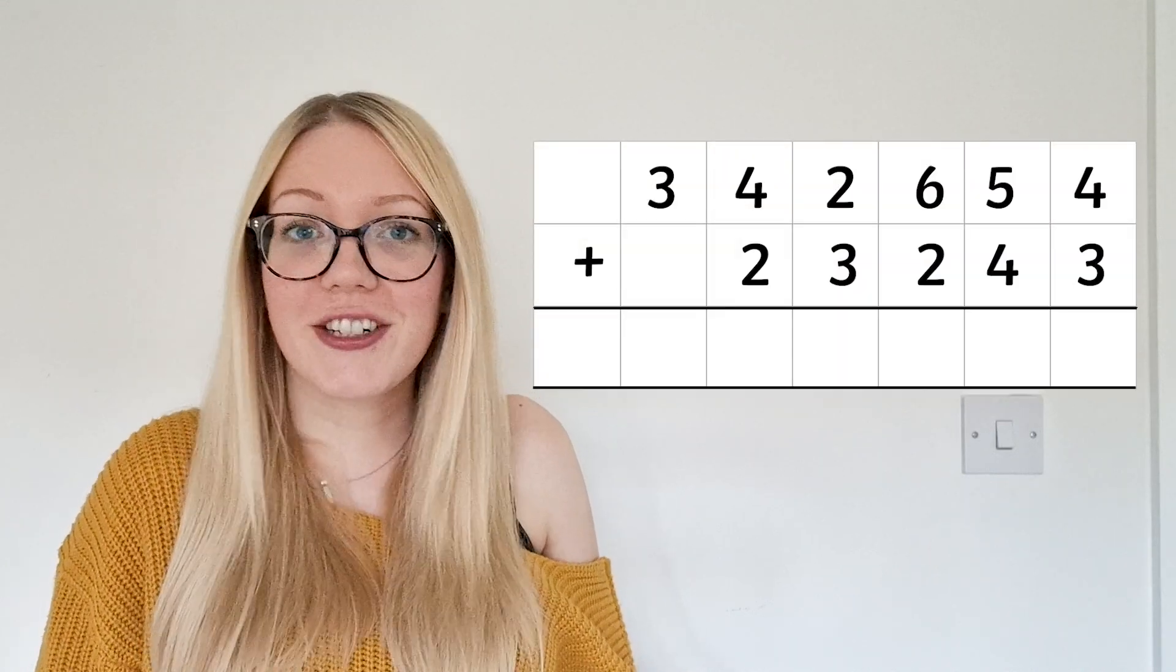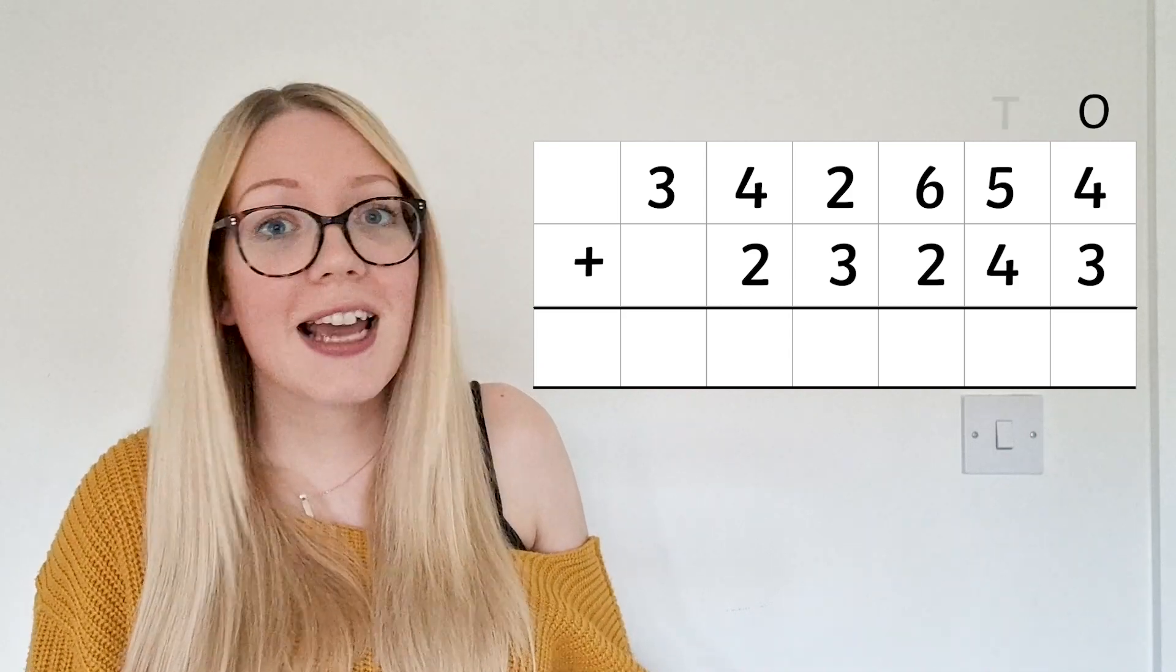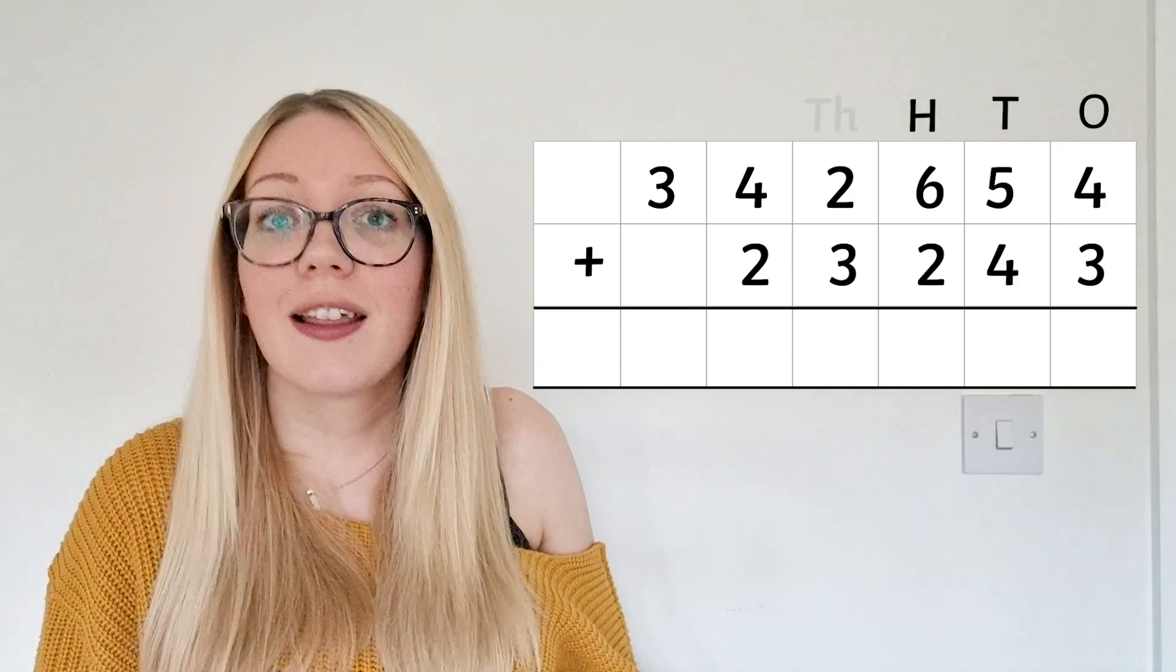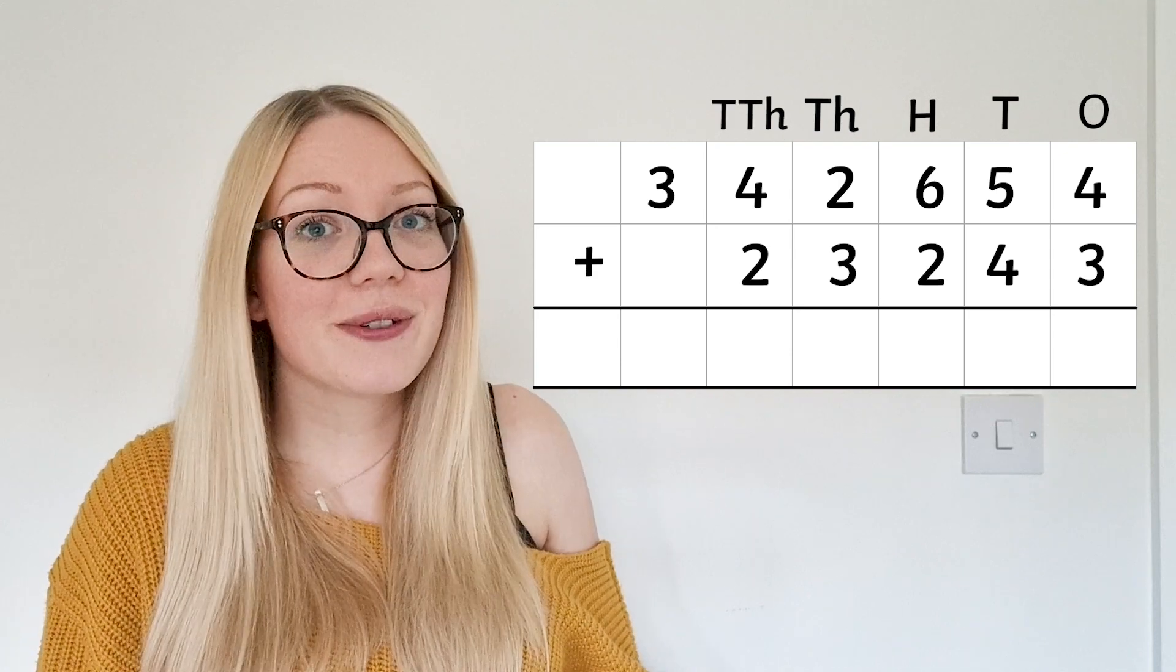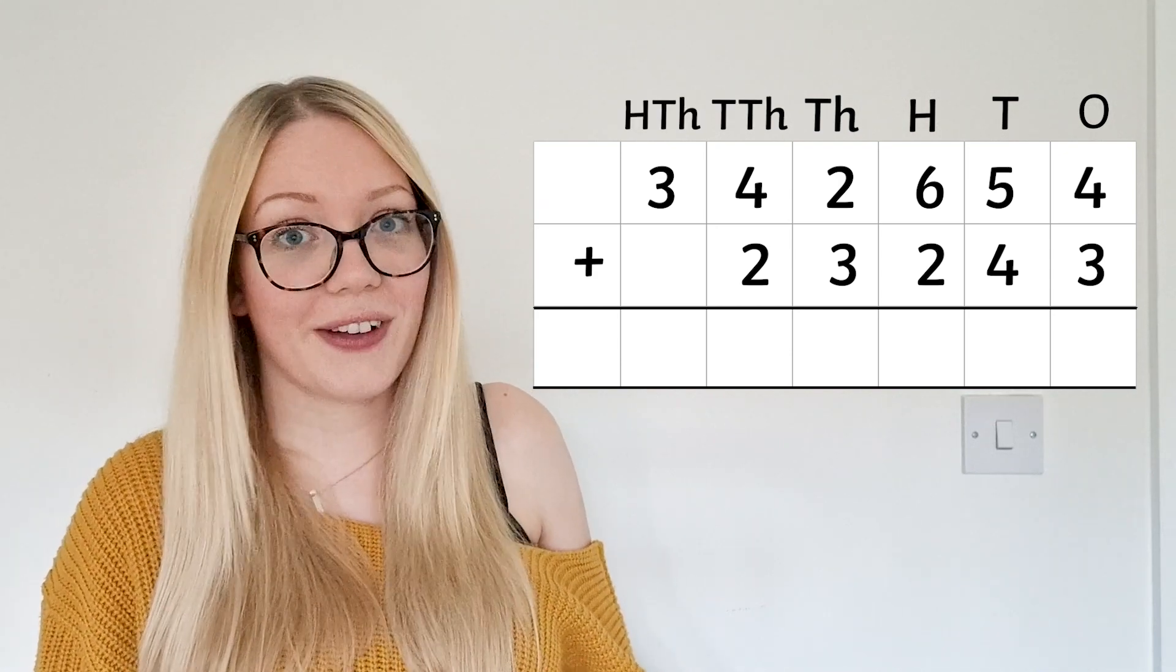Now let's take a look at how this can help us with column addition. When you write your addition like this, each column represents the ones, tens, hundreds, thousands, tens thousands and hundreds thousands, just like it does in the place value chart.